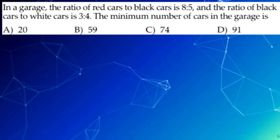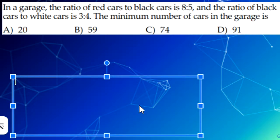The next question is, in a garage, the ratio of red cars to black cars is 8 to 5, and the ratio of black cars to white cars is 3 to 4. The minimum number of cars in the garage is. For this question, we just have to expand the ratio so they have the same numbers. We can change 8 to 5 to 24 to 15, and we can change 3 to 4 to 15 and 20. Now we add up 24, 15, and 20, and we'll get 59. So our answer would be B, 59.